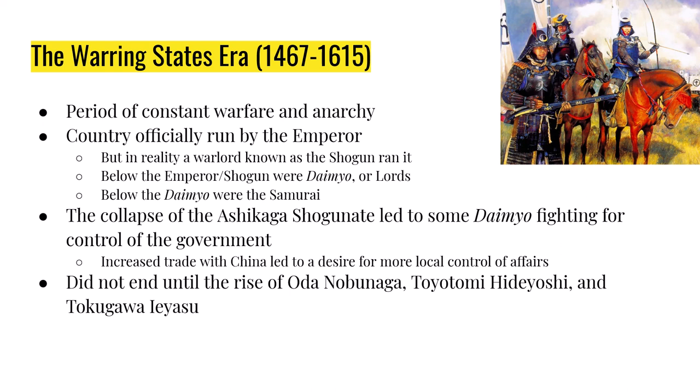At this time the country is run by an emperor, but the emperor is going to be replaced by a warlord known as a Shogun. Below the Shogun are lords known as daimyo, and these feudal lords owned the land that peasants worked on. Controlled by the daimyo are samurai — elite soldiers who serve as the backbone of the Japanese military. The samurai are loyal to their individual lords.